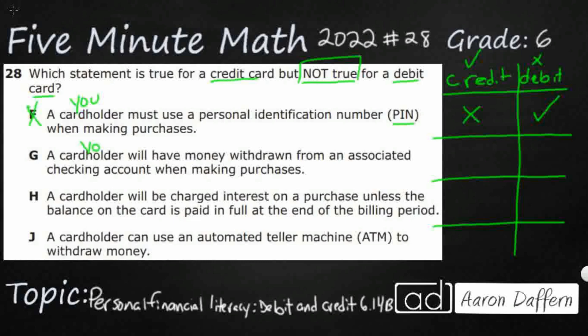Option G: a cardholder will have money withdrawn from an associated checking account when making purchases. We were just talking about this — if you pay with a debit card, yes, it comes straight out of your checking account. The tricky thing is that credit and debit cards both say MasterCard or Visa, so they look very similar. It's hard to tell from the outside which one is which. That just makes it easier for stores to accept, but a debit card comes straight out of your checking account.